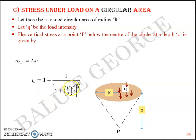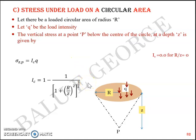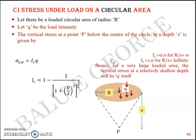So R and z influence Ic, and Ic in turn influences σzp. When R/z is approximately equal to 0, Ic equals 0; and when R/z approaches infinity, Ic equals 1. In short, for a very large loaded area, the vertical stress at a relatively shallow depth — meaning z tends to 0 and R/z tends to infinity — will be q itself. When Ic equals 1, σzp equals q.